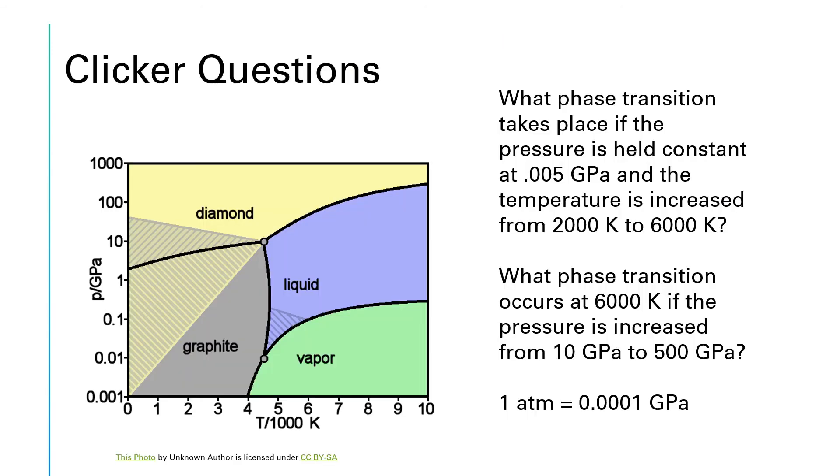So let's take this carbon phase diagram and do a couple of practice questions. The first one says, what phase transition takes place if the pressure is held constant at 0.05 gigapascals and the temperature is increased from 2,000 Kelvin to 6,000 Kelvin?